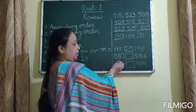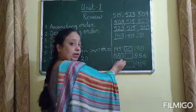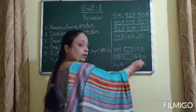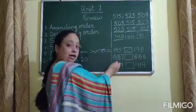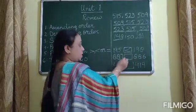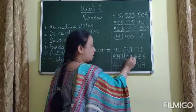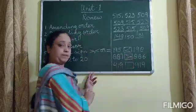Similarly, here, which number is greater between 887 and 886? 887 is greater. So, the sign we will put in this way.